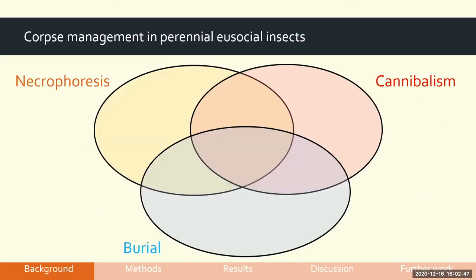We've done a lot of research into corpse management in perennial eusocial insects. Ants, for example, do a range of these different things because they're really plastic in their behaviour depending on the species and environmental conditions — so they do all three. Termites favour burial over the others but also cannibalise some of their dead.